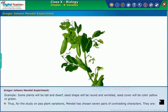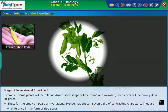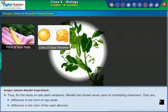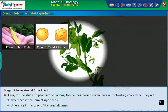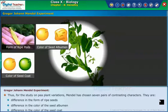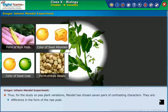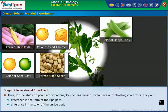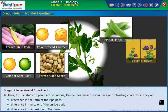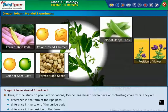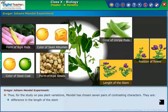The seven contrasting characters are: difference in the form of ripe seeds, difference in the color of the seed albumen, difference in the color of the seed coat, difference in the form of the ripe pods, difference in the color of the unripe pods, difference in the position of the flower, and difference in the length of the stem.